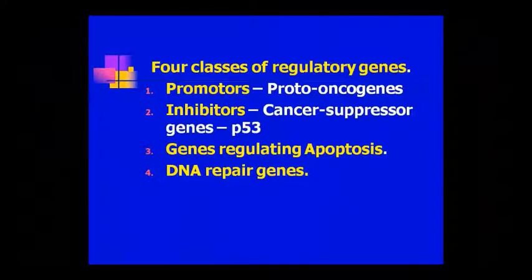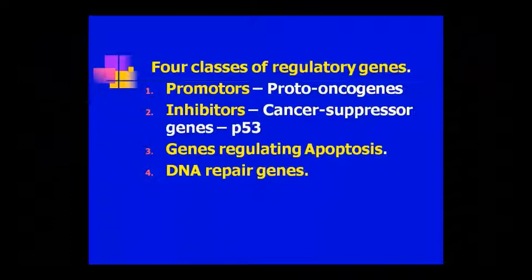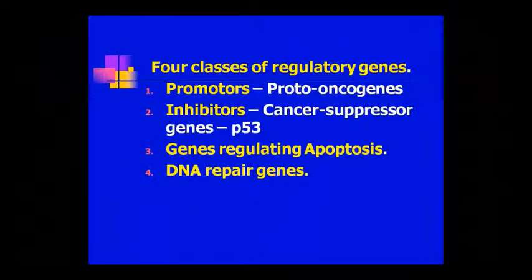There are 4 classes of regulatory genes: 1) Proto-oncogenes (promoter gene), 2) Tumor suppressor or anti-tumor genes (inhibitor gene), such as p53, 3) Genes regulating apoptosis — apoptosis means natural or programmed cell death, and 4) DNA repair genes. Proto-oncogenes are normally inactive, and tumor suppressor genes are active to suppress tumor growth.